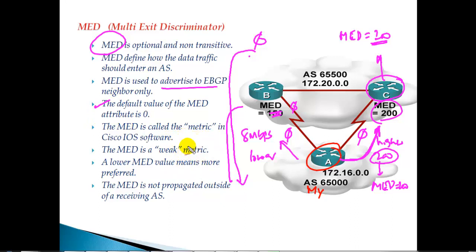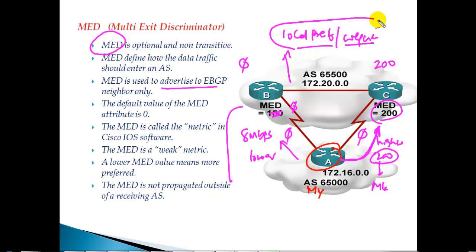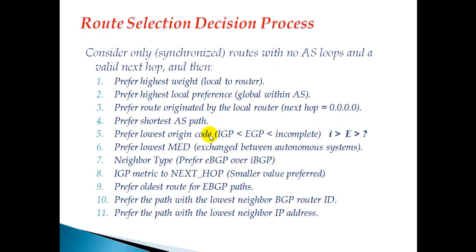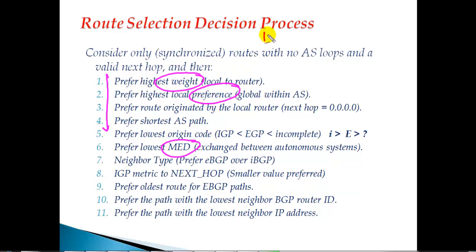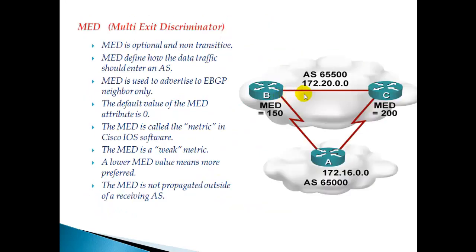There is one more thing to consider when using MED: it is a weak attribute. If the remote autonomous system is also configured with weight or local preference, those will take precedence. MED value manipulation — where one side is 0 and the other is 200 — will be overridden if weight or local preference is configured, because those are evaluated before MED in the BGP path selection process. In the default path selection order: weight is most desirable, then local preference, and MED comes much later. So we must ensure the remote AS is not using weight or local preference to get the desired result.